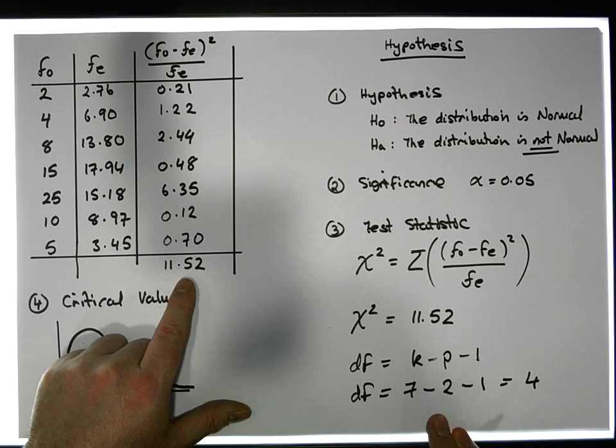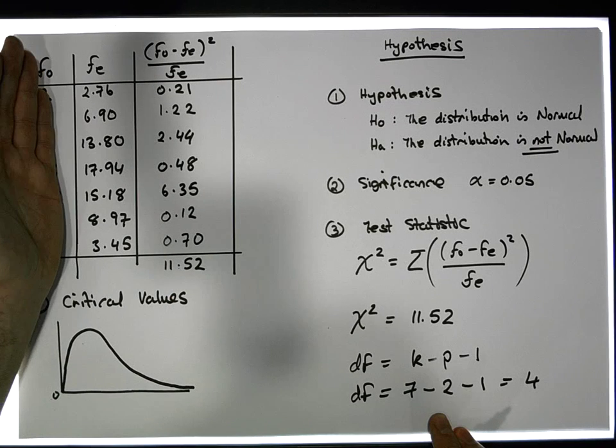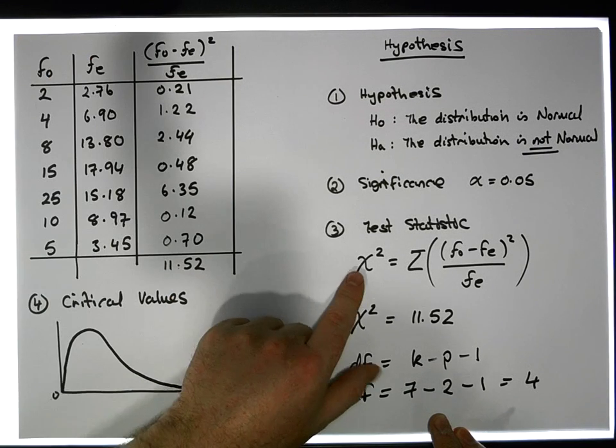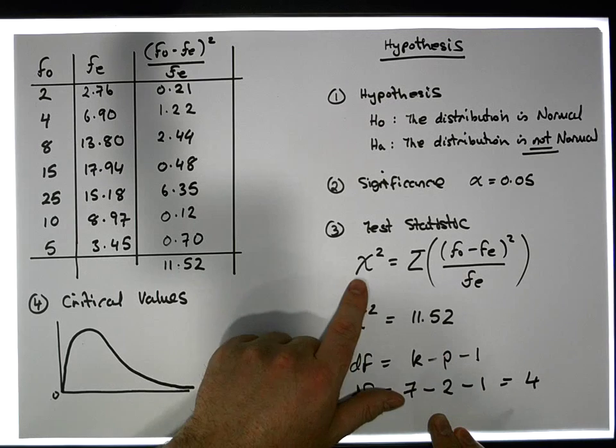If there's no evidence to suggest that there's a difference between the observations and the expected, the chi-squared test statistic should be effectively zero or very close to it.